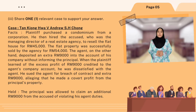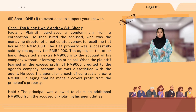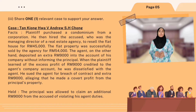The facts: the plaintiff purchased an apartment for a corporation, then hired the accused who was the managing director of a real estate agency to resell the apartment for RM45,000. The property was successfully sold by the agency for RM54,000. However, the agent deposited the extra RM9,000 into his company's account without informing the principal. When the plaintiff learned of the excess profit of RM9,000 credited to the agent's company account, he was dissatisfied. He sued the agent for breach of contract and the extra RM9,000, alleging that the agent made a secret profit from the principal's property.